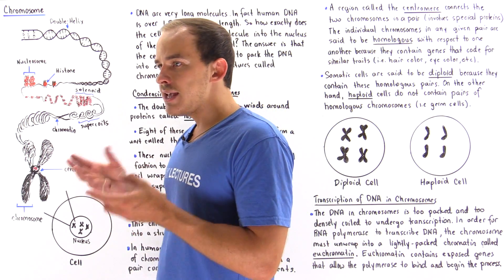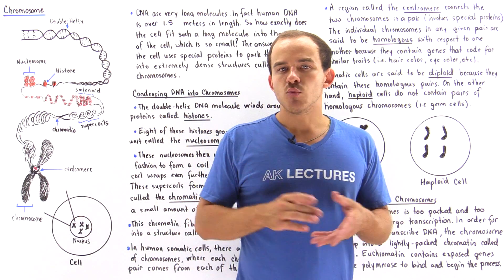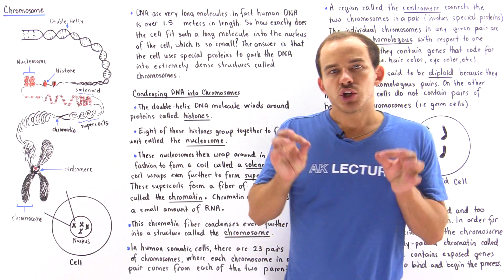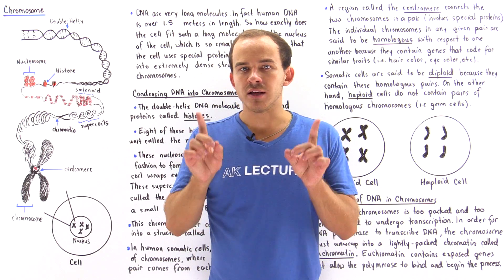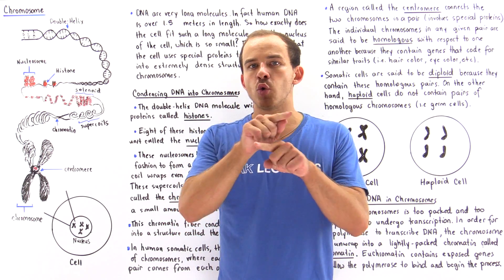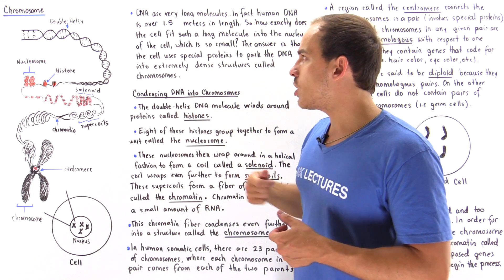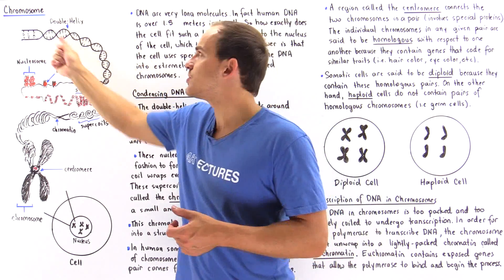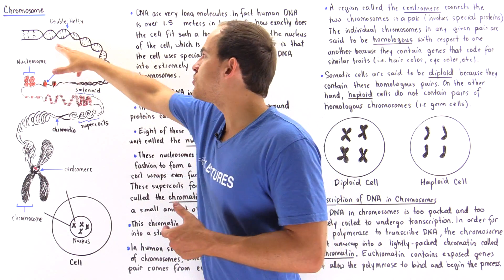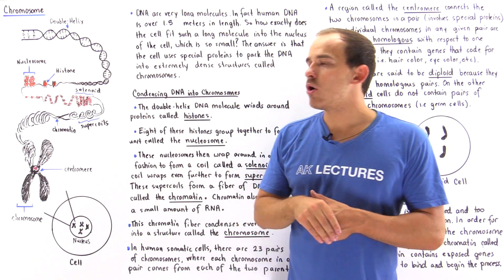The DNA contains a double helix structure. What that basically means is two anti-parallel single strands of DNA join together and form a helical structure known as the double helix, which looks something like this.